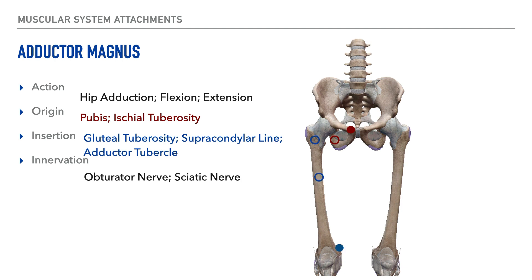Notice that two of the circles are open, which indicates that these insertion points are on the posterior aspect of the femur. The more superior open circle shows the location of the gluteal tuberosity, and the more distal open circle signals the location of the medial supracondylar line. The completely filled blue circle represents the location of the adductor tubercle. The nerve that innervates this muscle is both the obturator and sciatic nerve.